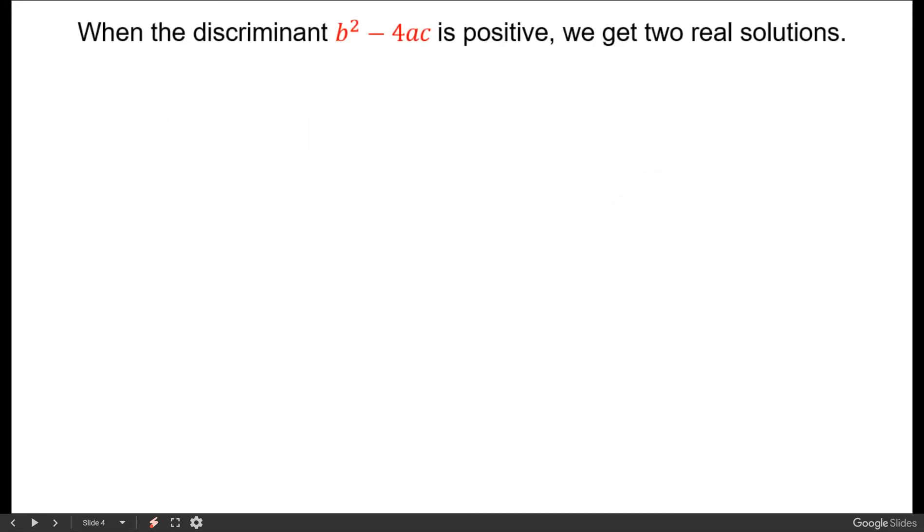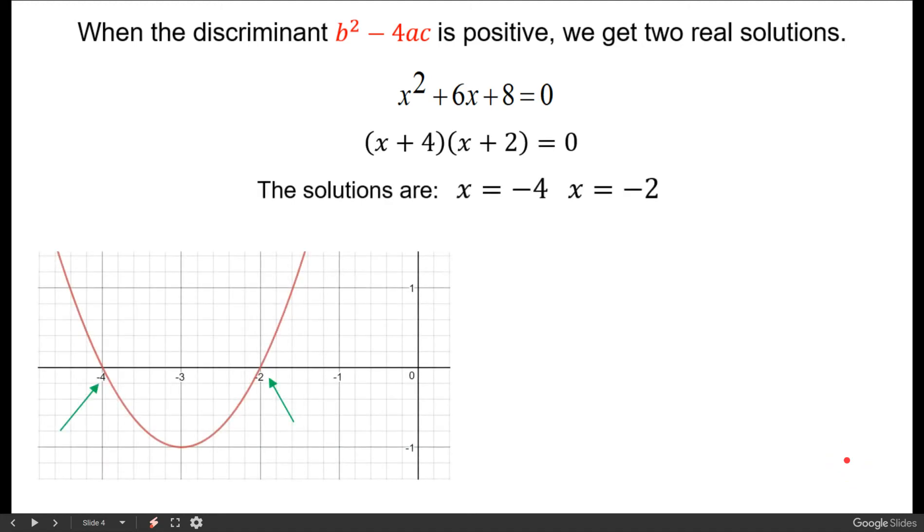So the first example is when we get a discriminant that's positive. Here's an example and if we were to factor this we would see that the solutions are negative 4 and negative 2 and we cross the x-axis at negative 4 and negative 2.